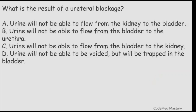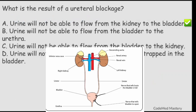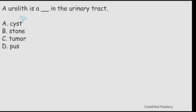Next question: what is the result of a ureteral blockage? Option A: urine will not be able to flow from kidney to the bladder. Option B: from bladder to urethra. Option C: from bladder to kidney. Option D: urine will be trapped in the bladder. The right answer is option A, because ureters are urinary tubes that connect the kidney to the urinary bladder, so if there is a ureteral blockage, urine will not be able to flow from kidney to the bladder.